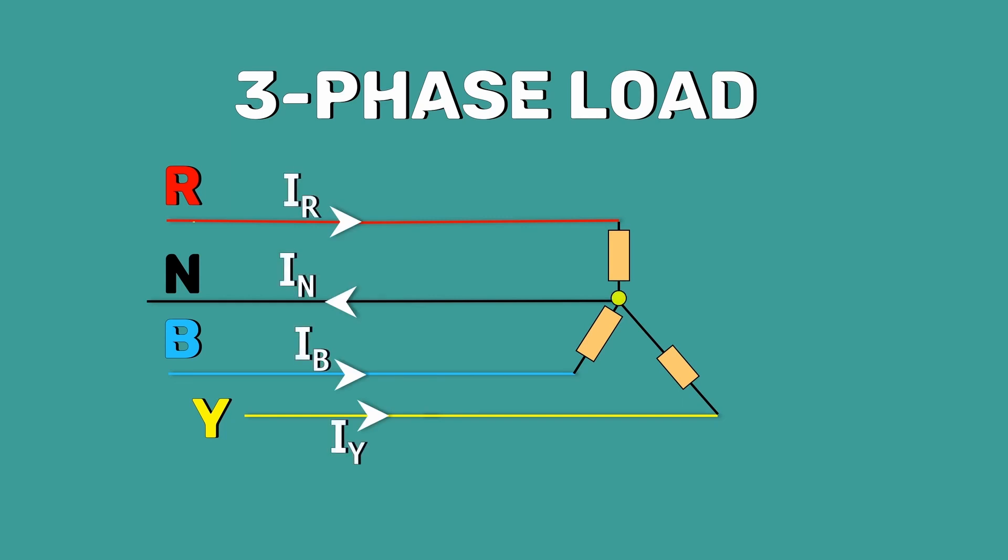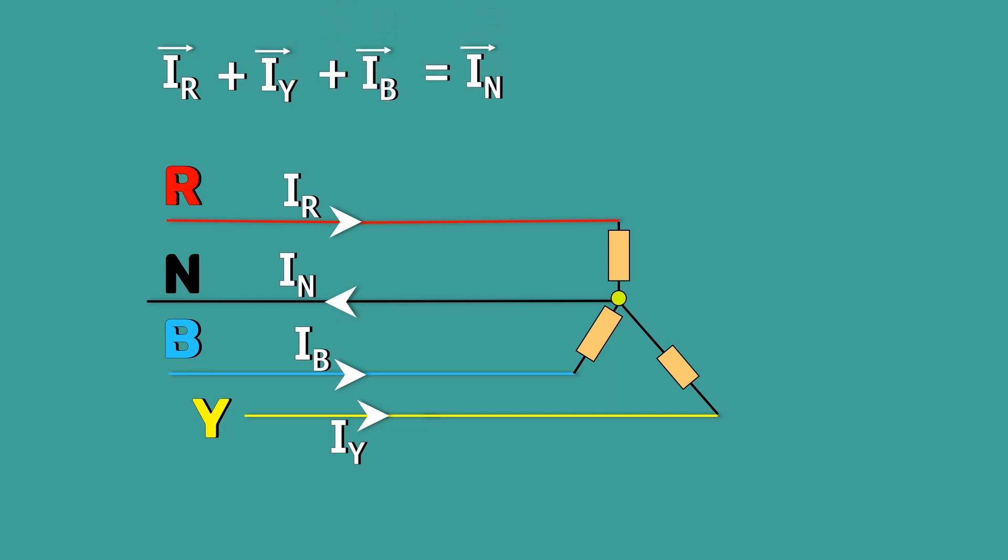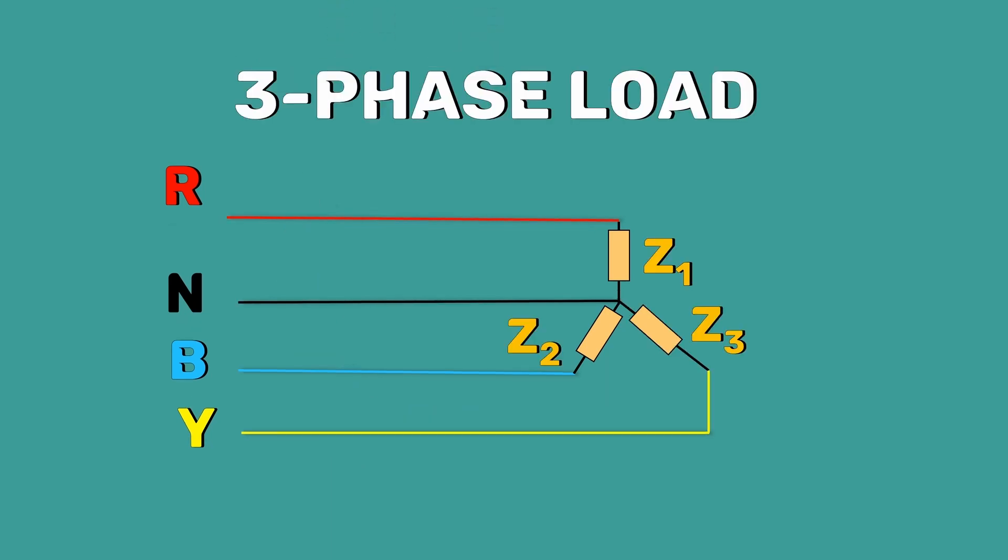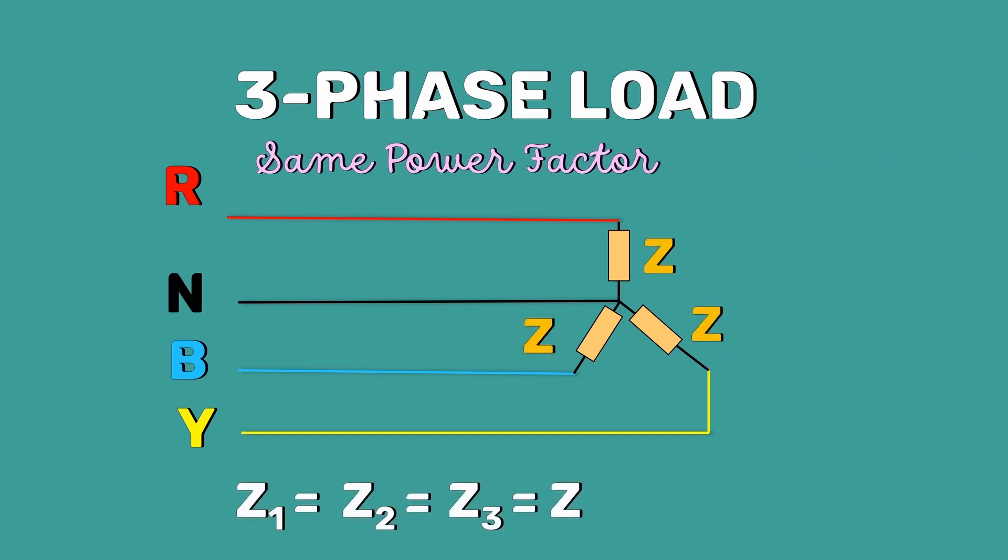Applying Kirchhoff's current law at this junction, we get IR plus IY plus IB equals IN. Then, the three phase loads that have the same impedance and power factor in each phase are called the balanced loads.